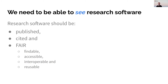Ideally, this means that research software should be published, it should be cited, and it should be FAIR — which means findable, accessible, interoperable, and reusable. Achieving these goals for software enables many things, including appropriate recognition for creators, discovery and reuse by the community, a reduction in duplicated effort, and improved reproducibility.